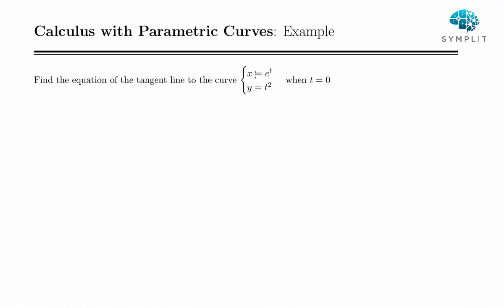The point, of course, just comes from the parametric equation. So our x value is e to the 0, which is 1, and our y coordinate is 0 squared, which is 0. So we've got our point.